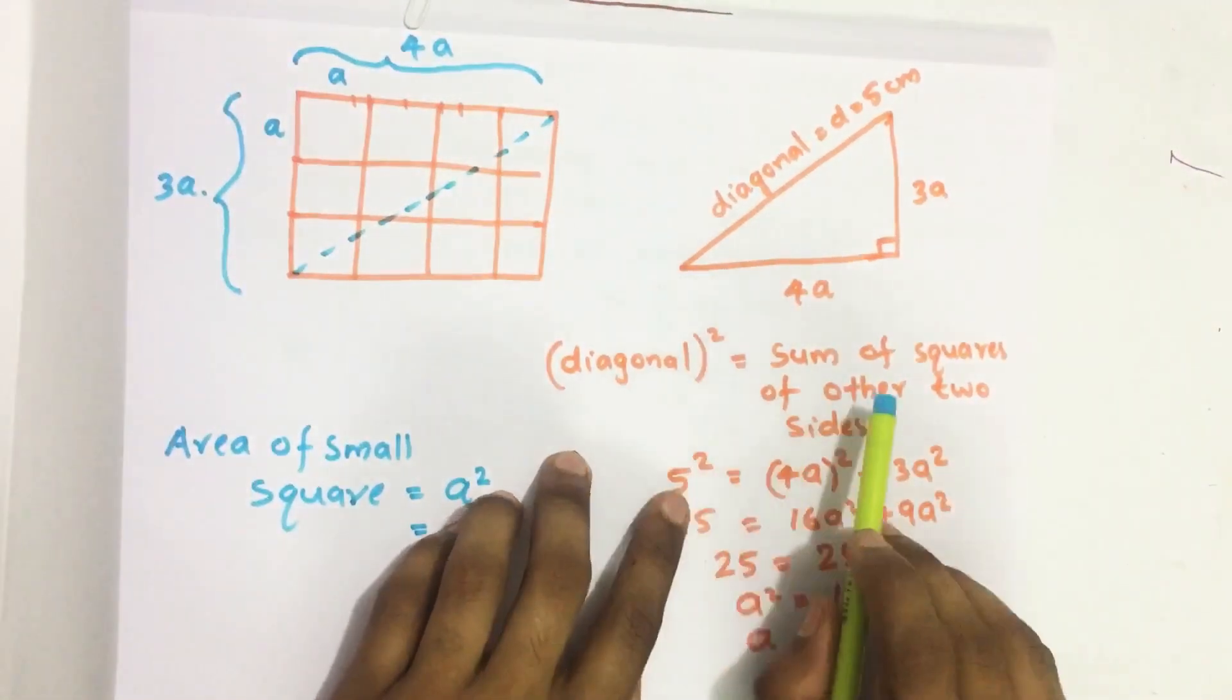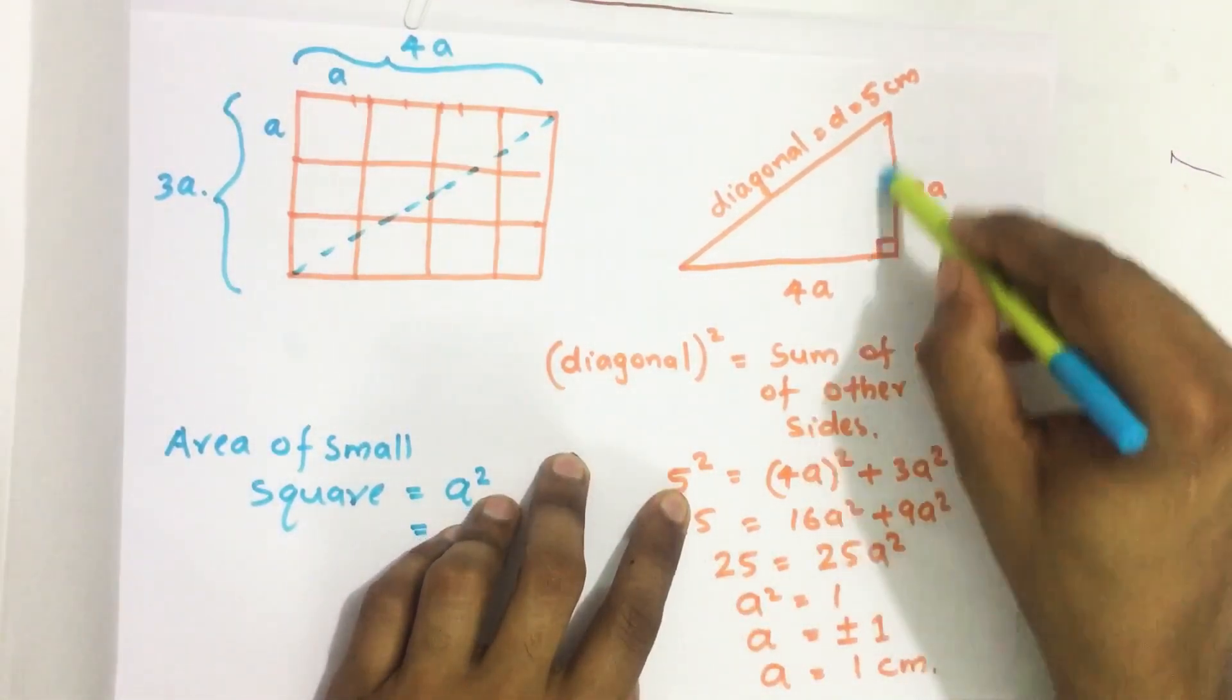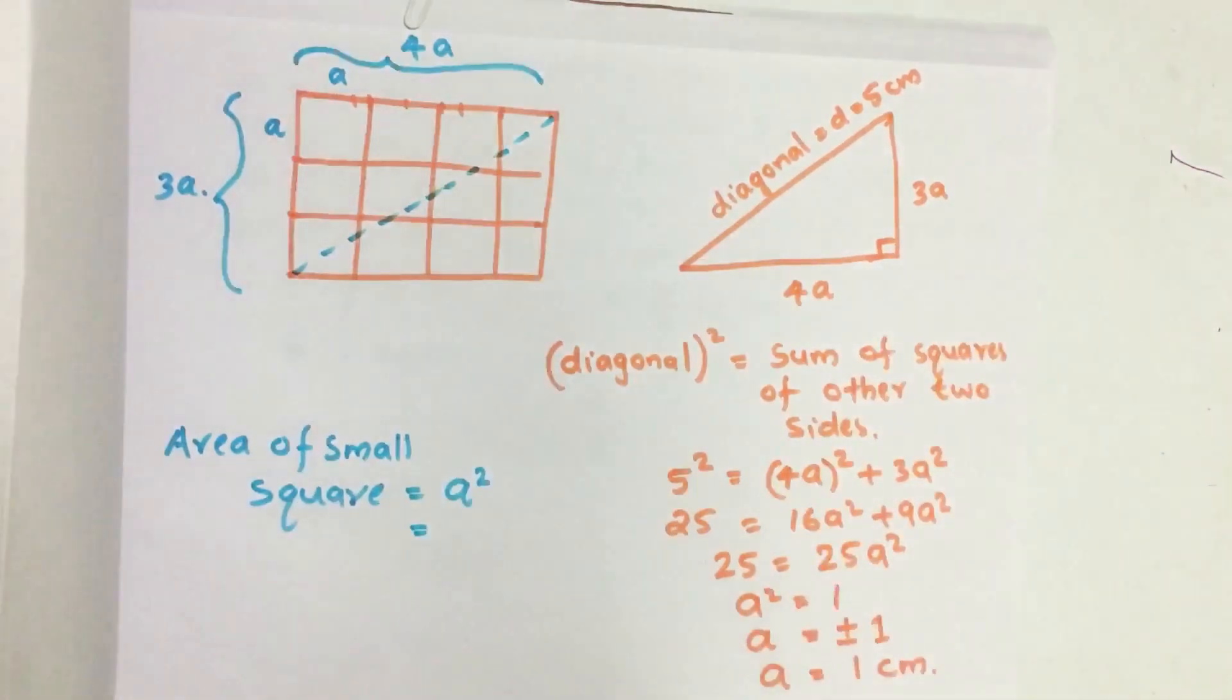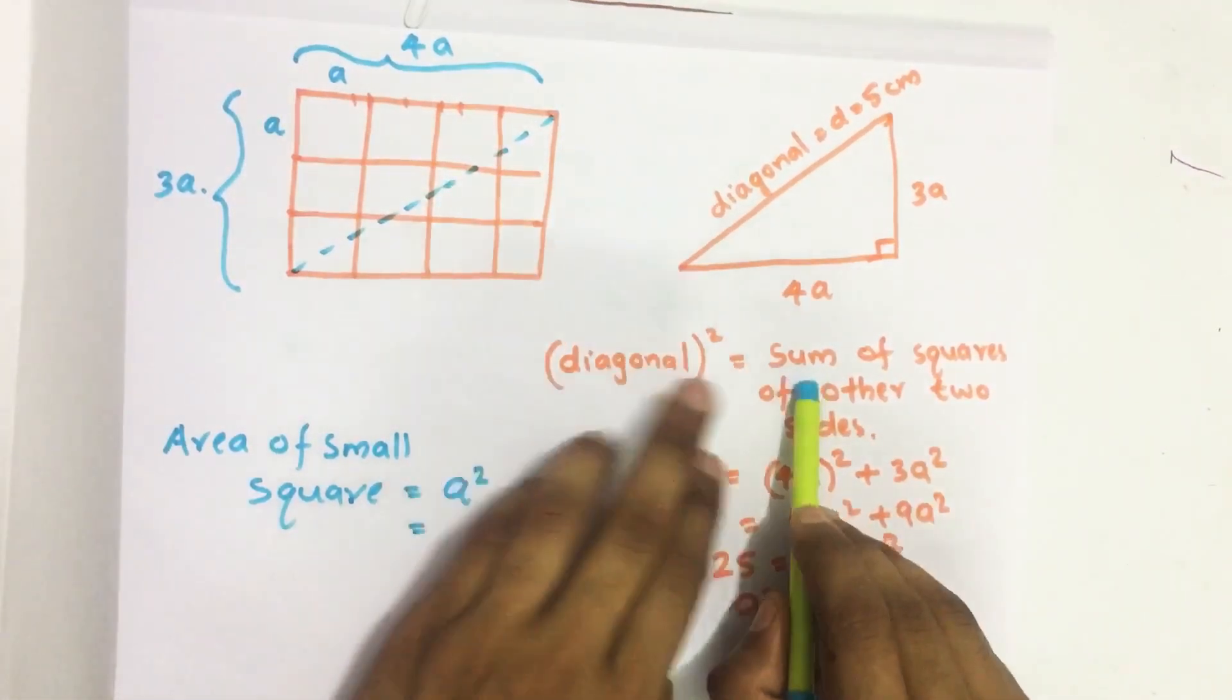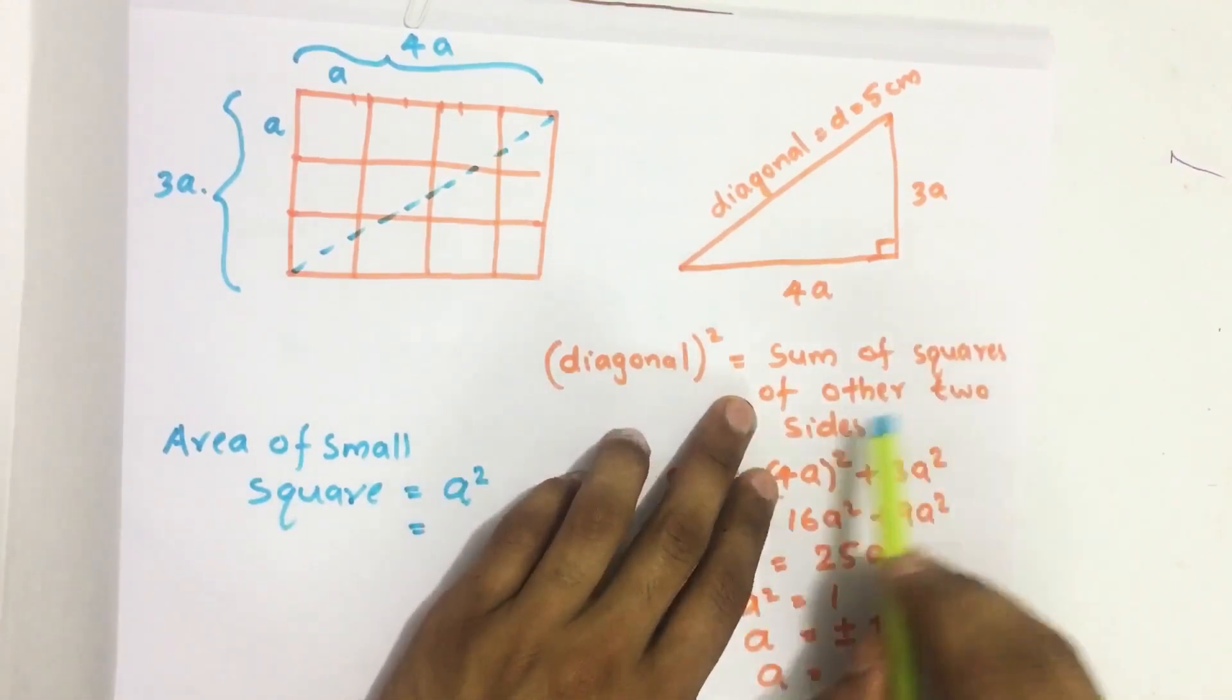Diagonal squared equals—this becomes a right triangle. Then by Pythagoras theorem, diagonal squared equals the sum of squares of the other two sides.